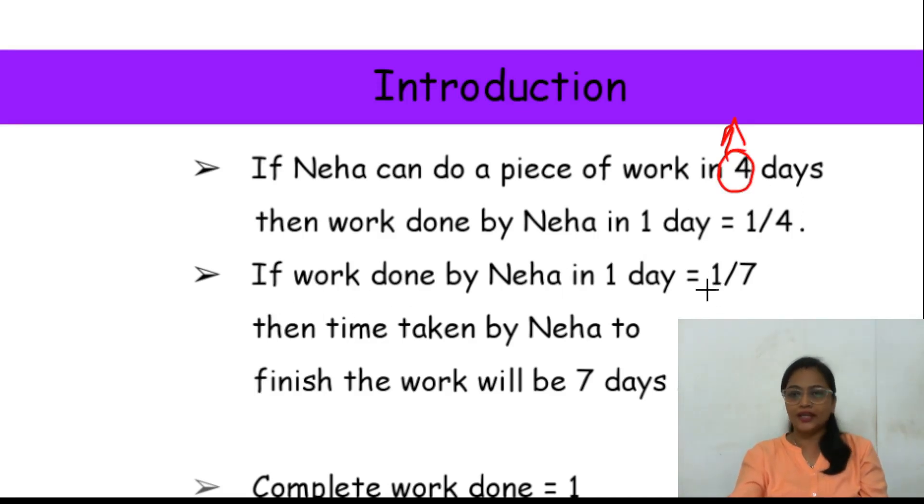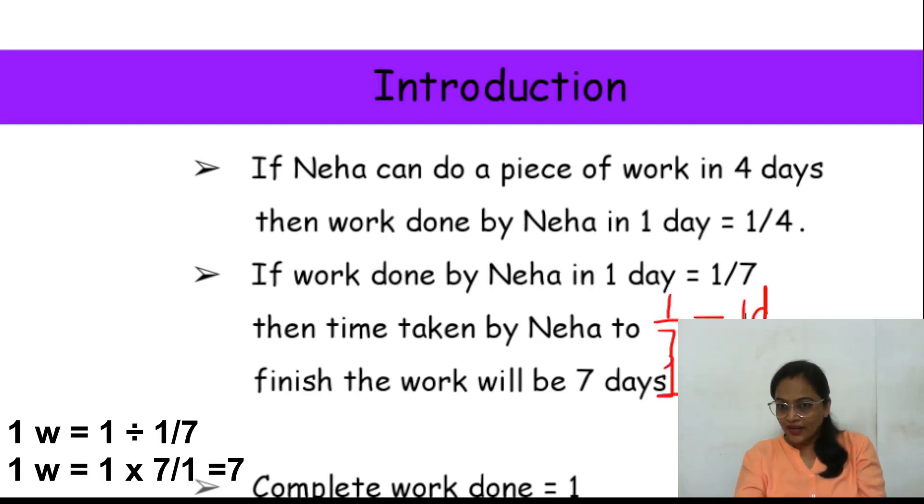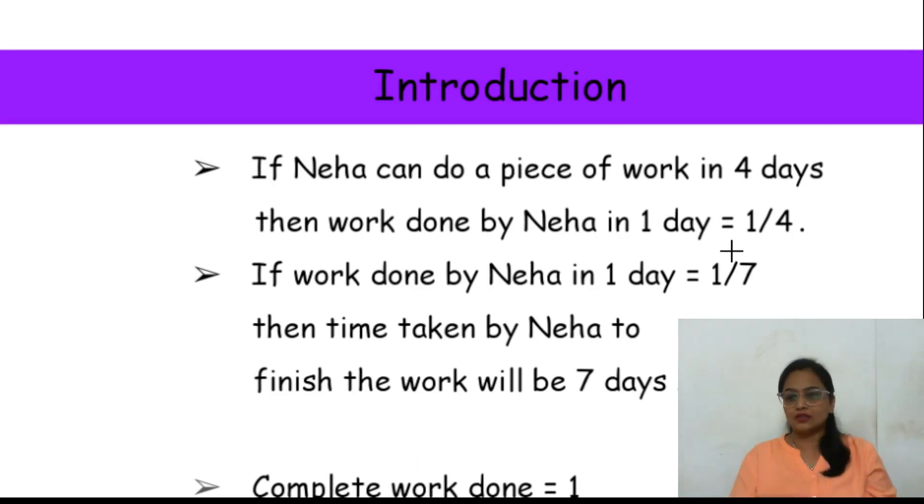Second hai, if work done by Neha in one day is one by seven, matlab ki ek din mein woh one by seven kaam karti hai, kisi bhi kaam ka, toh time taken by Neha to finish the work will be seven days. Ek din mein one by seven kaam karti hai, right? Ya aap kehlo ulta. One by seven kaam karti hai ek din mein, toh ek pura karne ke liye, right? One pura karne ke liye kitna lagega? One day divided by this one by seven. Ya aap kehlo one, isko solve karne ke liye, main division ko multiplication bana du, aur is cheez ka reciprocal karti hai, that is seven by one. So, comes out as seven days.